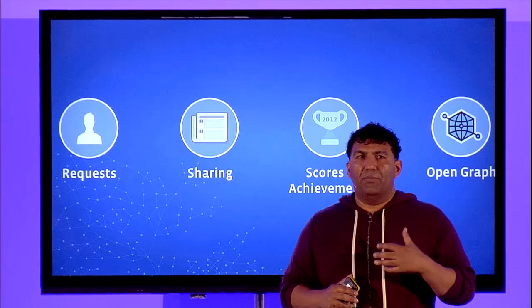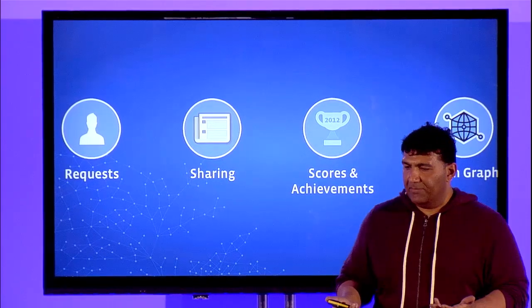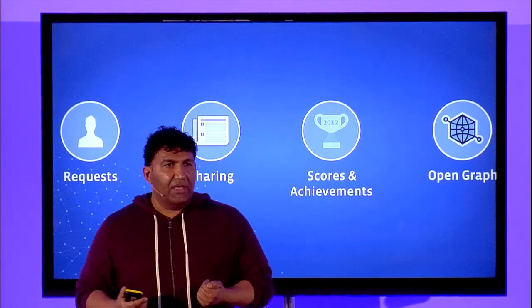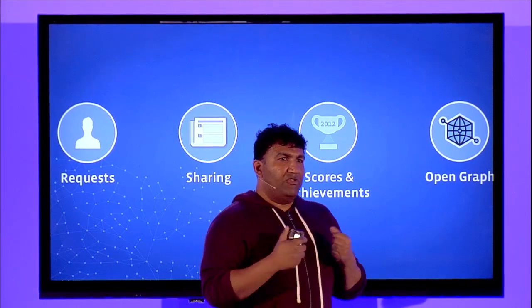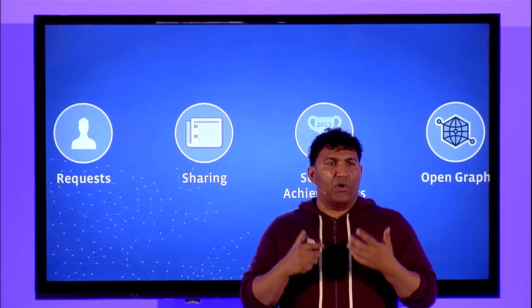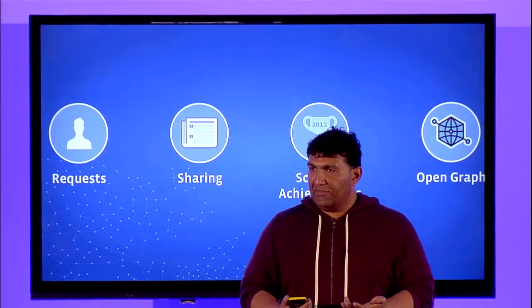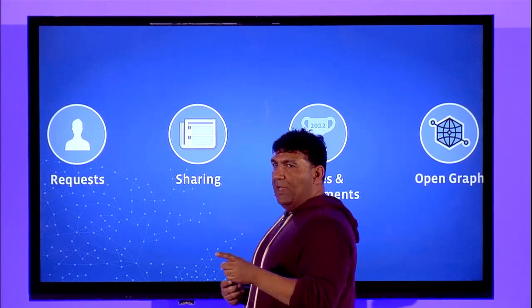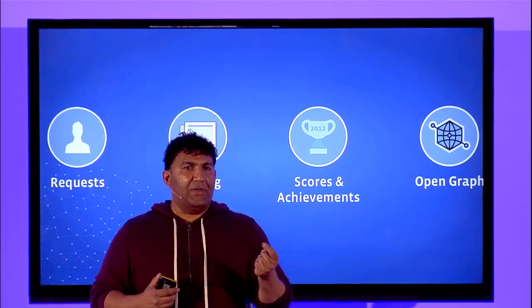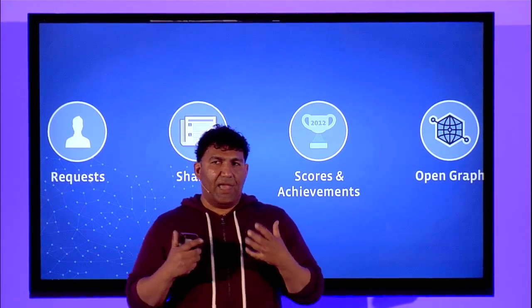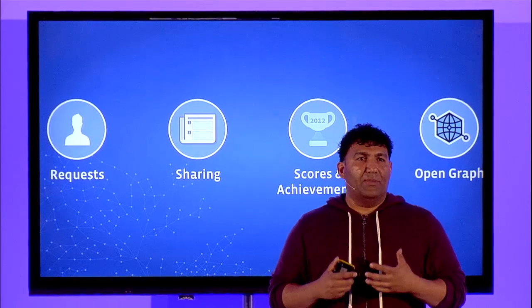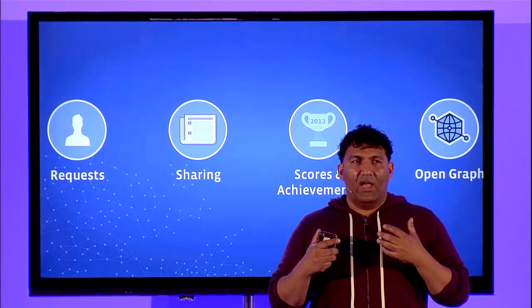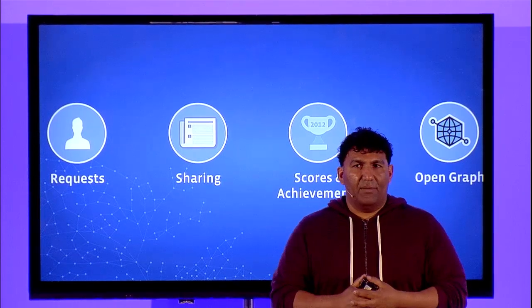So far we've talked about four things: the social channels that enable you to build games discovered organically. Requests enable you to send invites, challenges, and gifts to users. Sharing enables a player to share important achievements from their game to their friends. Scores and achievements — with one simple API publishing an integer to Facebook — you can create scoreboards and tournaments and stoke that competitive nature inherent to all of us. And lastly, I encourage you to learn more about Open Graph, which is probably the best way to deliver very engaging stories that drive greater discovery and growth of your game. Thank you very much.